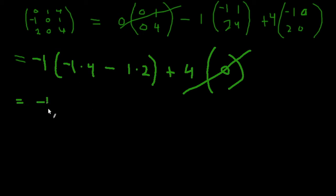Which is -1 times -1 times 4, which is -4, minus 2, which is -6. And then you're going to be left with -7. Oh oops, that's a multiplication. So we're going to be left with 6, and this is going to be your final determinant.